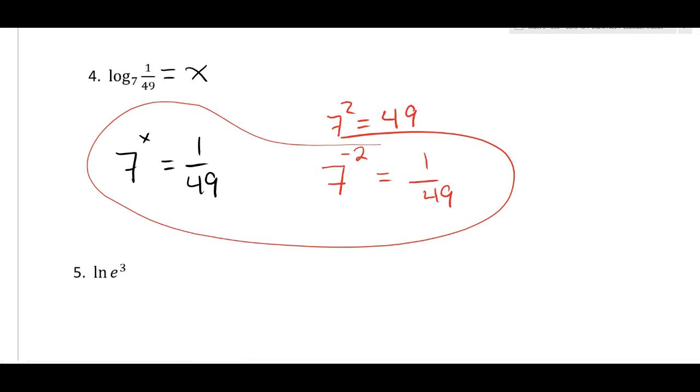This one you can do for sure because we know that exponent rule. So if this was equal to x, then you would write it as seven to the x is one over 49. Now we know that seven squared is 49. So it has to be true by that exponent rules about negative exponents that seven to the negative two is one over 49. Then comparing these two statements, it kind of seems obvious that we must have x equals negative two. Because if this is true, then this is true. And so x has to be negative two.